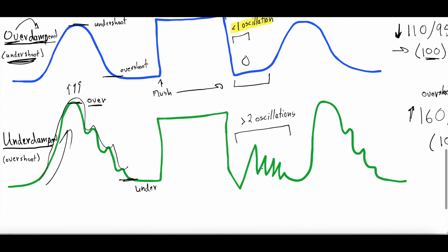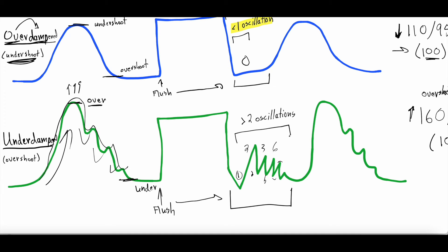For under-dampened: not enough dampening, which means the systolic blood pressure is too high. You see what looks like multiple dicrotic notches. When you pull the flush and let go, you count a bunch of oscillations — one, two, three, four, five, six, seven, eight — before it returns to the waveform. Greater than two oscillations is under-dampened. Because it's under-dampened, there's not enough dampening, so naturally there's going to be a bunch of oscillations.